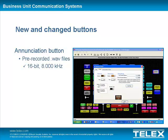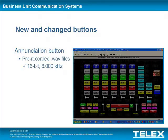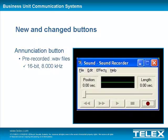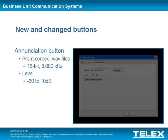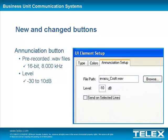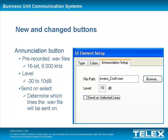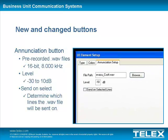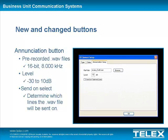If needed, the sample rate can be changed by using Microsoft Sound Recorder, which is installed by default on the Telex Nexus Dispatch Console and on Windows computers. The Level field identifies the relative change in dB in the level of the WAV file. The range for this field is minus 30 to 10 dB. The Send on Select field allows the user to determine which lines the WAV file will be sent on. If this field is unchecked, the WAV will be sent on the line associated to the button in the Type dialog. If this field is checked, the WAV file will be sent on all selected lines.